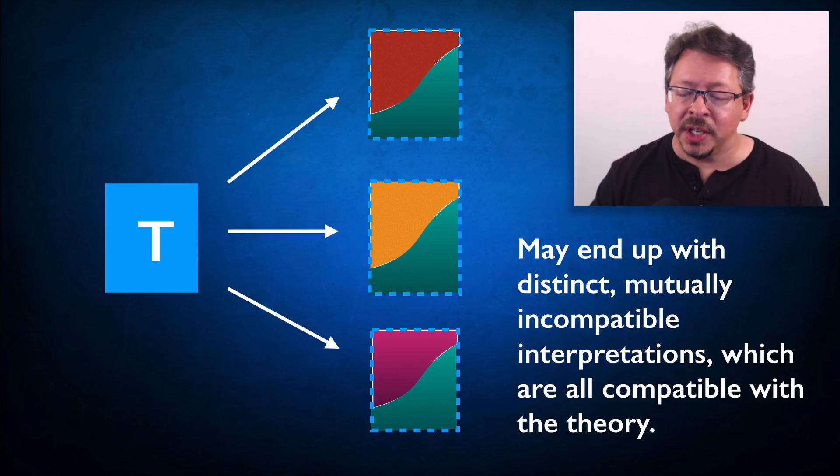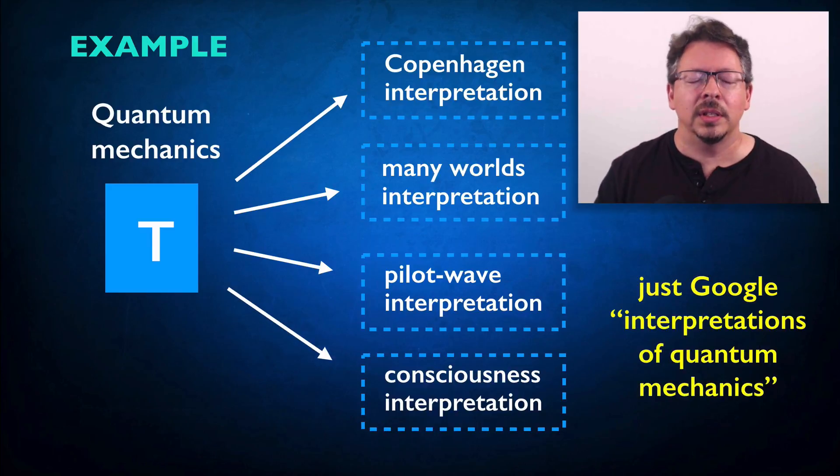But each of the interpretations is compatible with theory in the sense that they share all the features that we actually rely on when we reason with a theory, like when we generate testable predictions about what we should observe in the world from the theory. This is a general problem for interpreting theories.